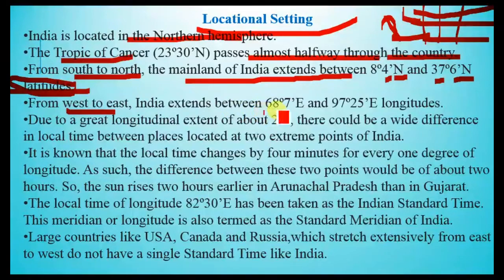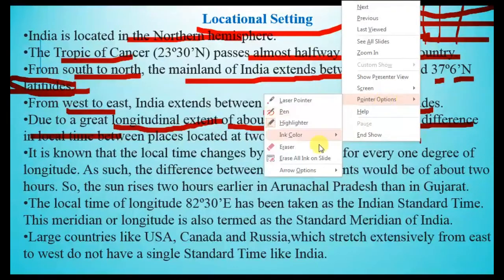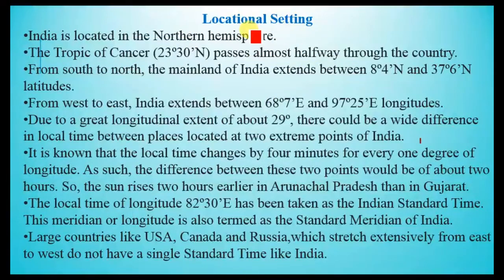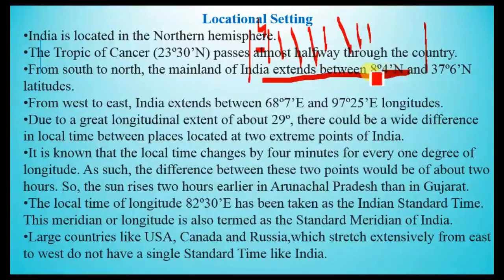From west to east, India extends between 68°7' E and 97°25' E longitudes. Due to a great longitudinal extent of about 29 degrees, there could be a wide difference in local time between places located at the two extreme points of India. For example, consider the west point and the east point — they span 29 degrees, and one degree corresponds to four minutes.